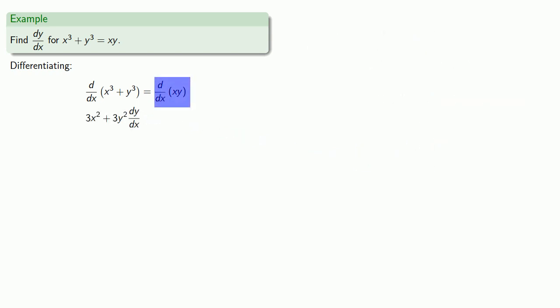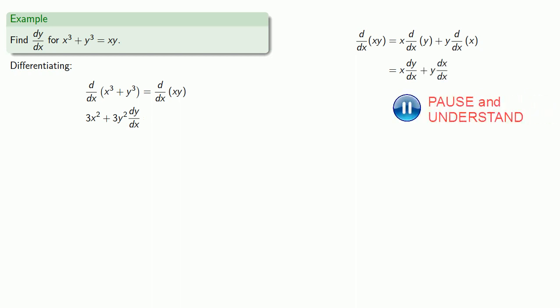On the right-hand side, we have the derivative of a product, so we can use the product rule. So, that'll be x times the derivative with respect to x of y, otherwise known as dy/dx, plus y times the derivative with respect to x of x, and simplifying. And so, there's our right-hand side.